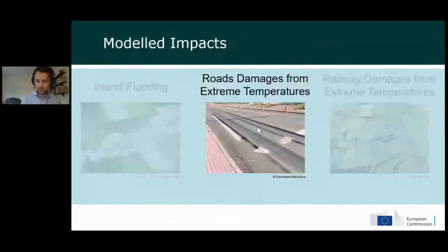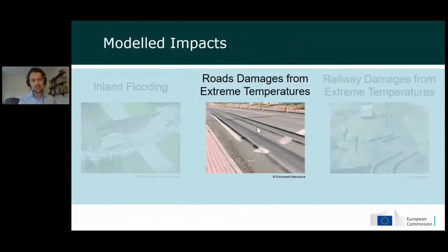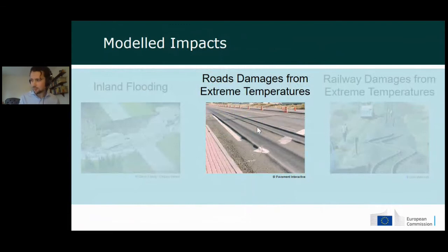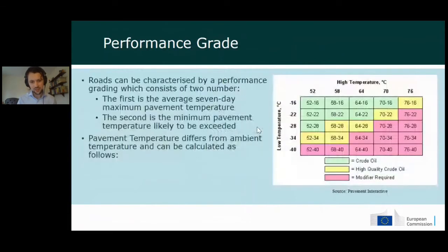Moving on to the second hazard: damage to roads from extreme temperatures. Under very warm conditions, the asphalt binder within a road can start to melt, causing rutting if there is traffic on the road, as visible in the picture. To quantify these damages, we use the performance grade system — a way of describing operating characteristics and boundary temperature conditions for a road.